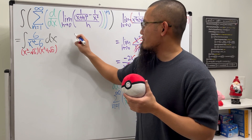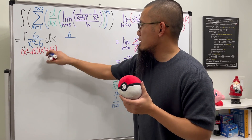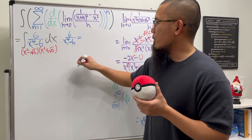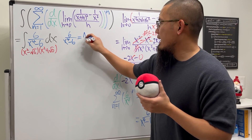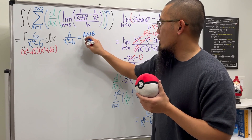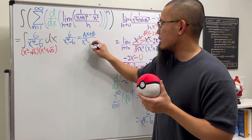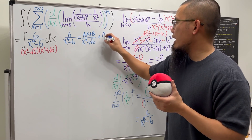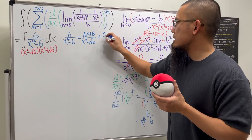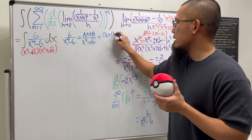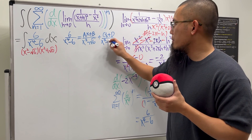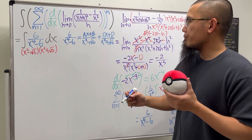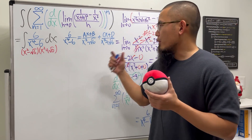We have 6 over those two factors. We set up partial fractions with a linear term over each irreducible quadratic factor: (ax + b) over (x squared minus square root of 6), plus (cx + d) over (x squared plus square root of 6).